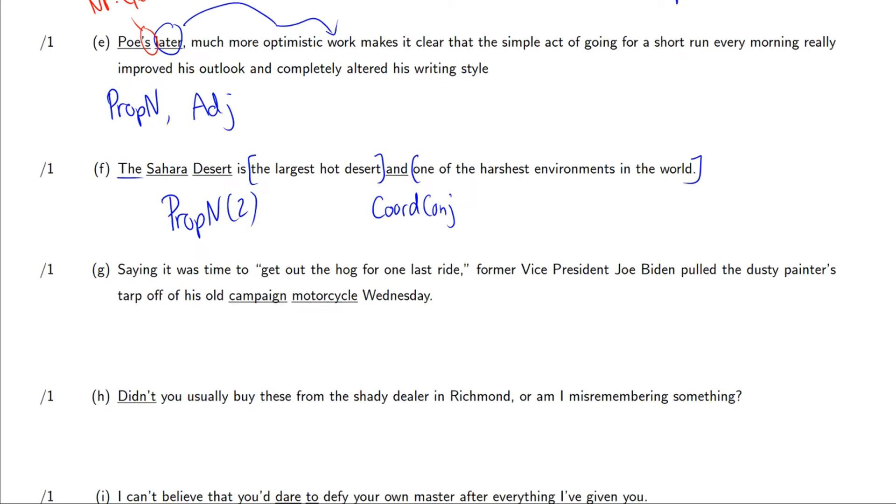In G, we have his old campaign motorcycle Wednesday. So motorcycle is a noun and campaign is also a noun. This is a case where we have another noun phrase campaign modifying a motorcycle to describe the type of motorcycle, much like we had with police officer or math teacher.